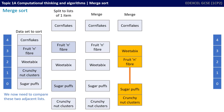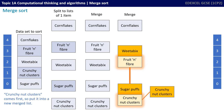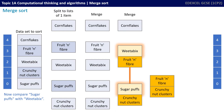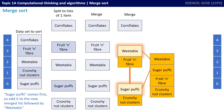We repeat the algorithm and now need to compare these two adjacent lists, which were merged from the previous single-item lists. We compare the first item in the first list with the first item in the second list. Crunchnut clusters comes first, so we put it into a new merged list. We now compare sugar puffs with the first item in the other list, which is fruit and fibre. Fruit and fibre comes first, so we put it into the new merged list. We then compare sugar puffs with Weetabix — sugar puffs comes first, so we add it to the new merged list, followed by Weetabix.